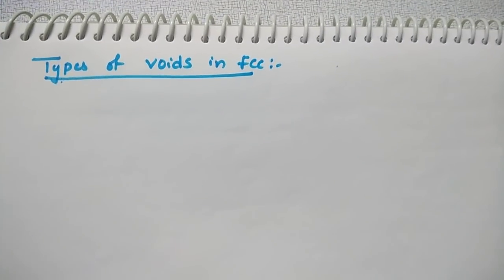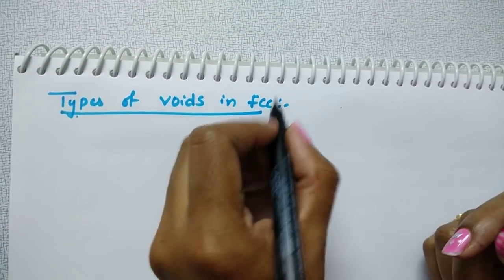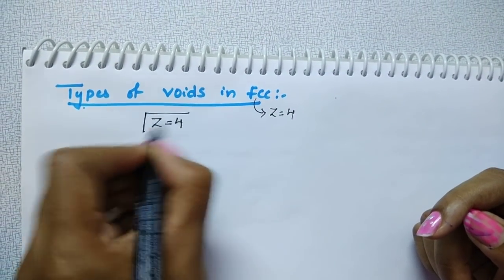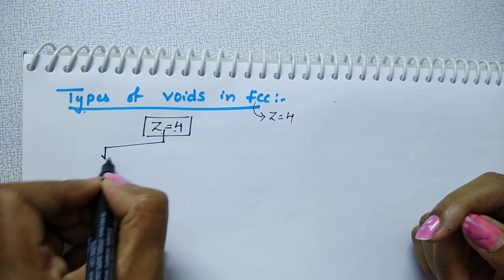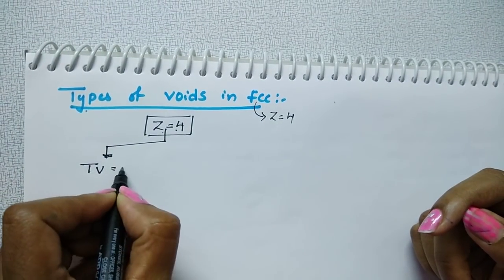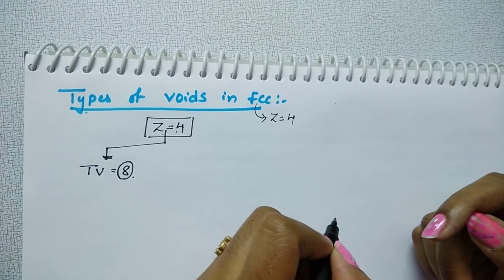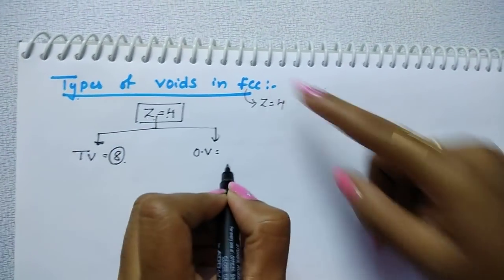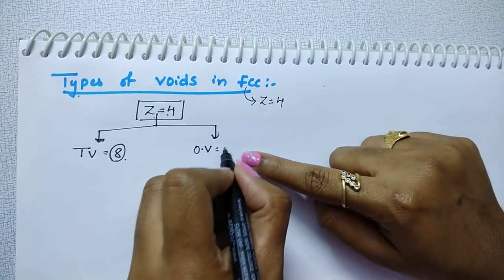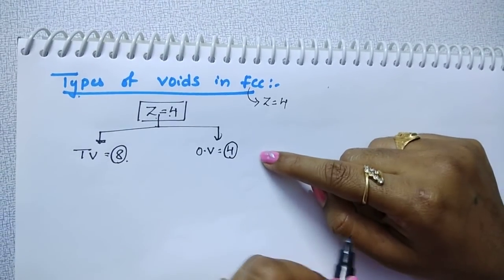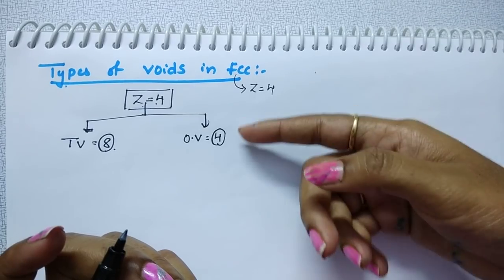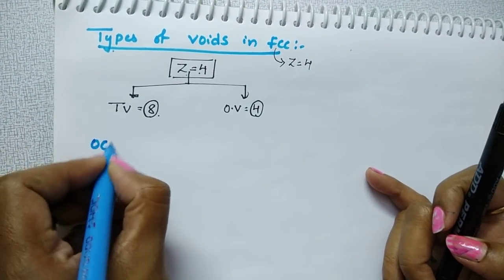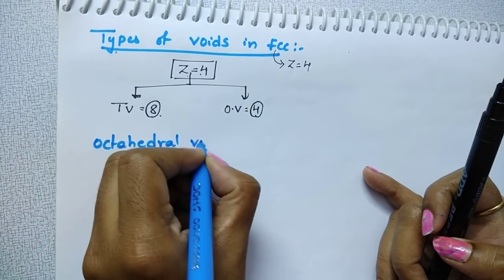Let us calculate the types of voids in FCC. In our previous video we already calculated the number of effective atoms in FCC is 4. When the number of atoms is 4, it forms tetrahedral voids equal to double the number of atoms — 2 into 4 equals 8 tetrahedral voids. It forms octahedral voids equal to the same as the effective number of atoms — so 4 octahedral voids. Tetrahedral voids are double the number of atoms; octahedral voids are the same as the effective number of atoms.